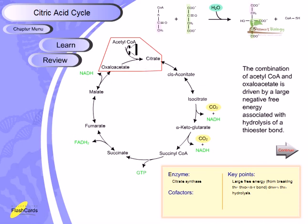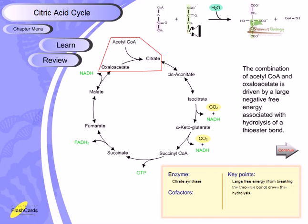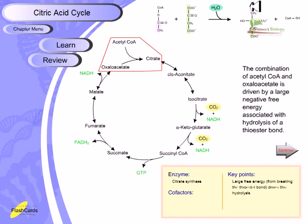The large negative free energy change drives this reaction forward because of the breakage of the thioester bond. In the detailed view, we can see the acetyl-CoA with its thioester bond and the oxaloacetate, which is a four-carbon molecule. When the thioester bond is broken, coenzyme A is released and oxaloacetate combines with the two-carbon molecule from acetyl-CoA to produce citrate, requiring the presence of water.